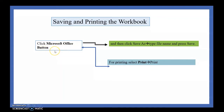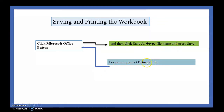Next, saving and printing the workbook. To save or print, click the Microsoft Office button in Excel 2007. If you are using Excel 2010 or a later version, click the File tab. When you click the File tab or the Office button, you will find many options. Use Save As to save, or the Print option for printing. Let me show you with the help of the MS Excel screen.